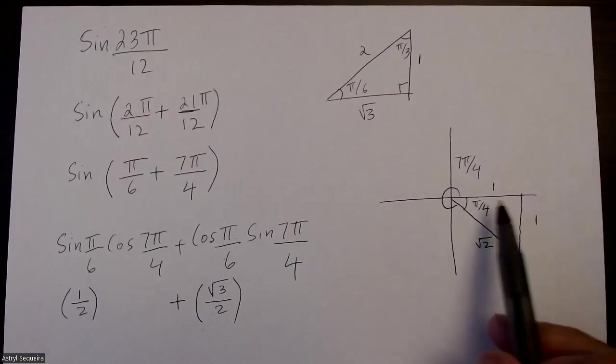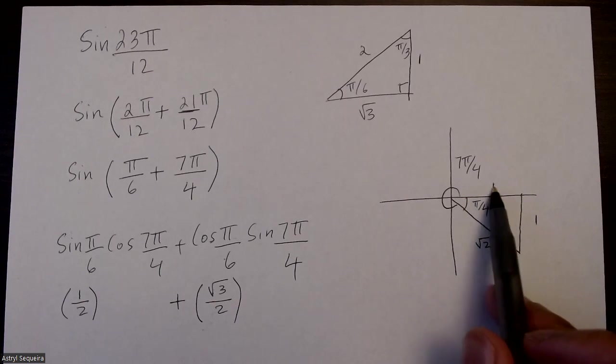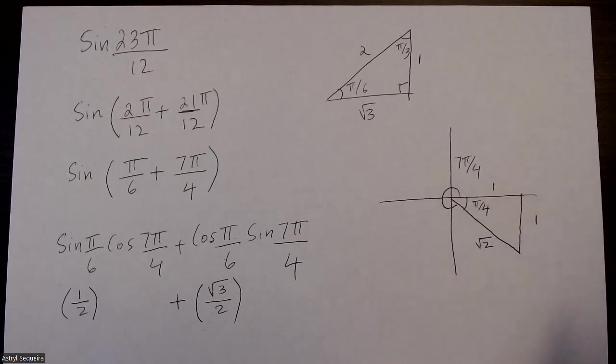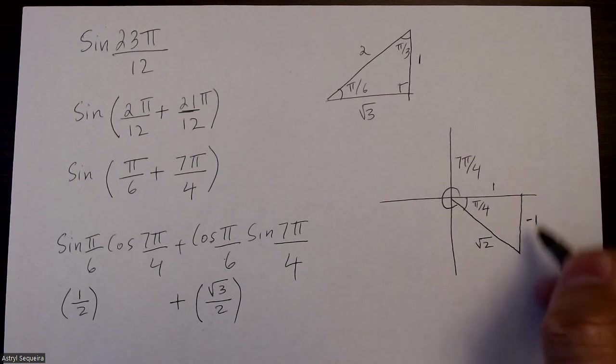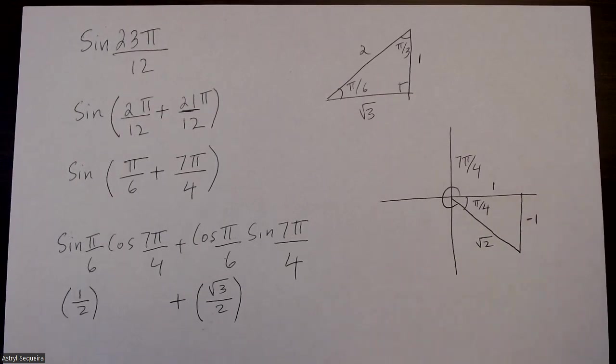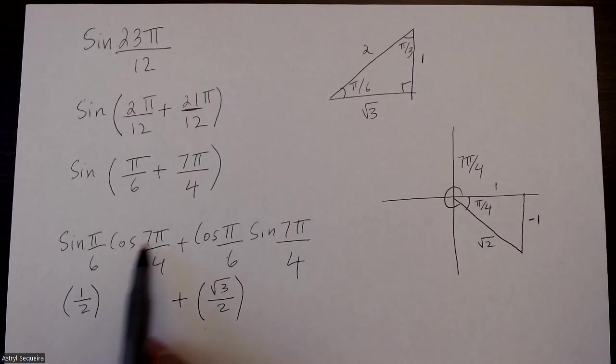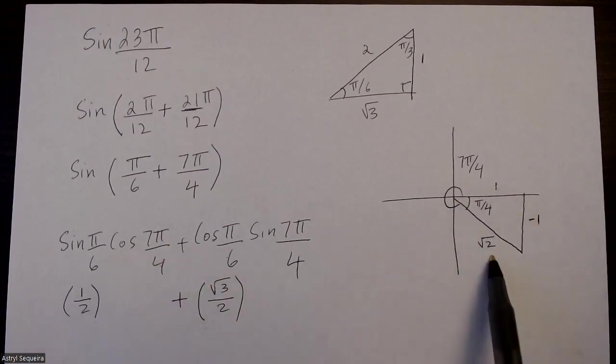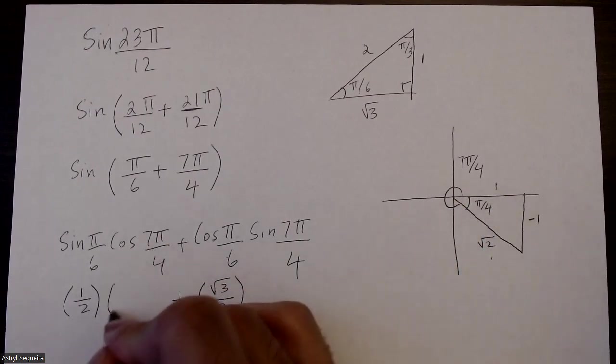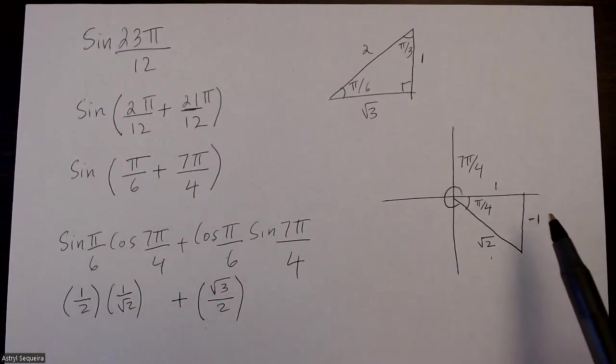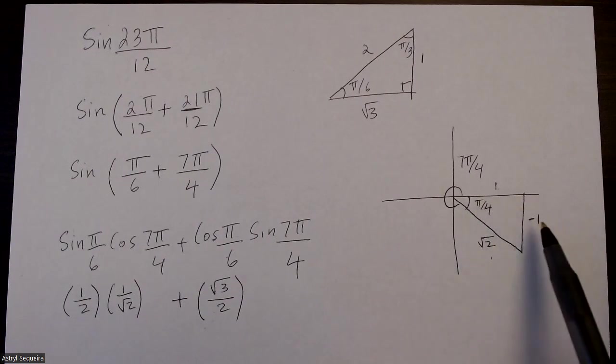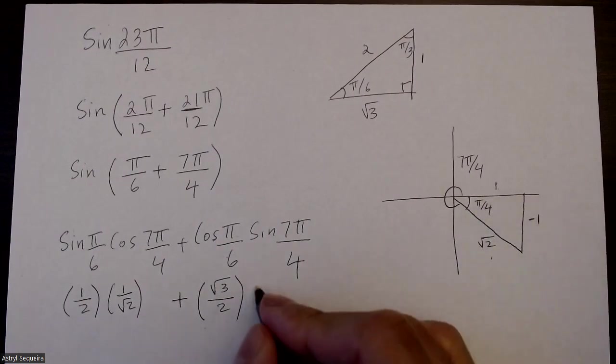But I also have to decide the signs of these two sides. This is positive 1 where this is on the positive x-axis. This is negative 1 because it's in the negative y-axis. So cos of 7π over 4, cos is adjacent over hypotenuse, so just 1 over root 2. And sine of 7π over 4 is just negative 1 over root 2.